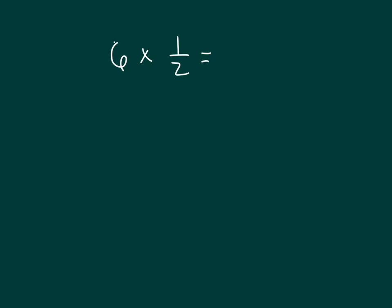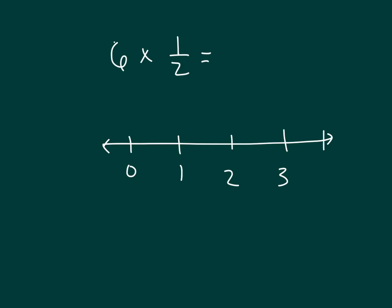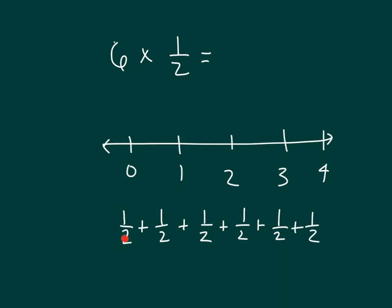Let's look at 6 times 1/2, and let's draw a number line to show how we can figure out 6 times 1/2. Here's 0, 1, 2, 3, and 4. We can write 6 times 1/2 as repeated addition. How many 1/2s would we be adding? Right — 6 of them. So 6 times 1/2 equals 1/2 + 1/2 + 1/2 + 1/2 + 1/2 + 1/2.